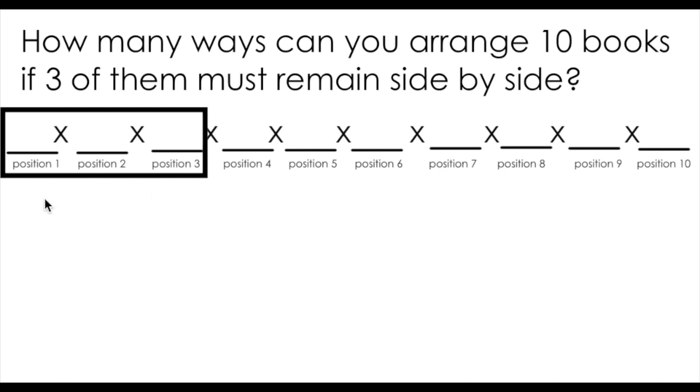I'm going to draw a box around three positions to indicate the fact that three of these books must remain side by side. So imagine, if you will, that three of these books just became, for all intents and purposes, one book. So if we think about the problem in this way, we now have eight books that we're arranging side by side.